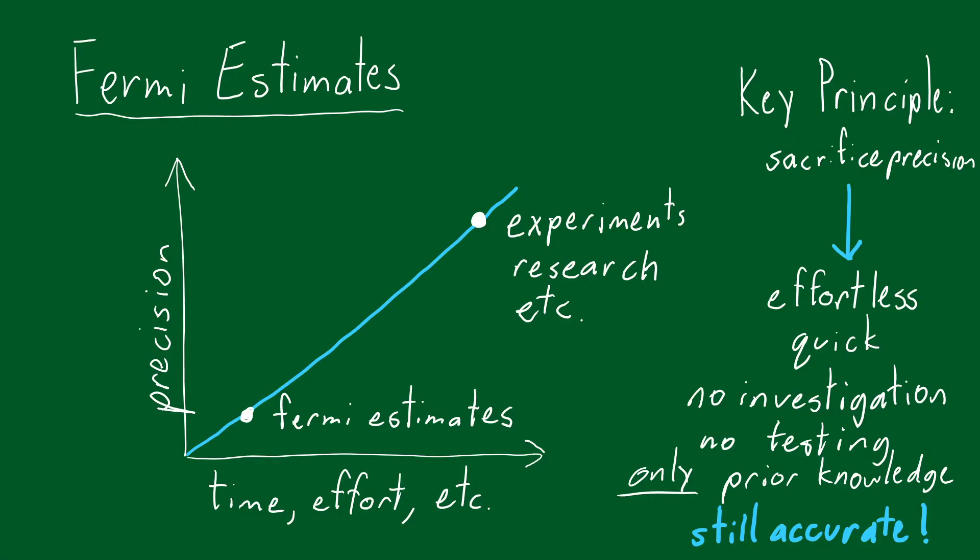Surprisingly, it is possible to reach a decent level of accuracy about difficult questions using no outside resources if done correctly. The essence of a Fermi estimate is that, rather than searching for a precise coefficient, we look towards the exponent in our final answer.